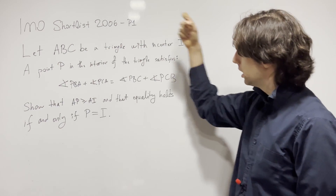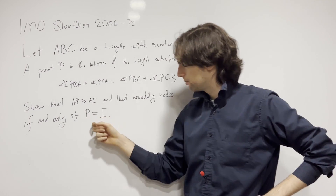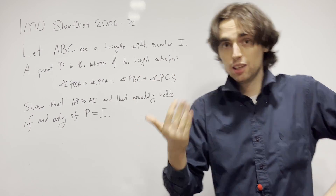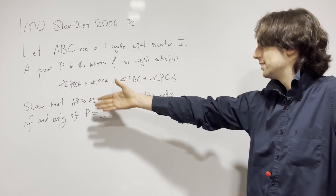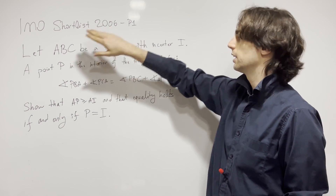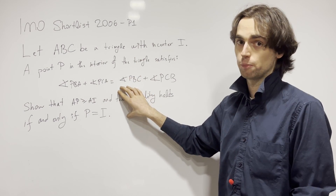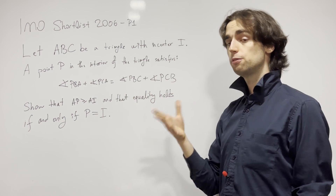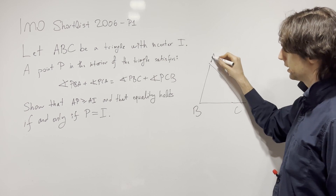Let's first read the problem. We have a triangle ABC with incenter I. A point P satisfies a certain condition inside the triangle, and we need to prove AP ≥ AI, with equality if and only if P equals I. What I notice is that P satisfying this relationship is really the crux — if we move that condition to the end, nothing changes. So the key question is: what is this condition telling us? I invite you to pause for five minutes and think about that.